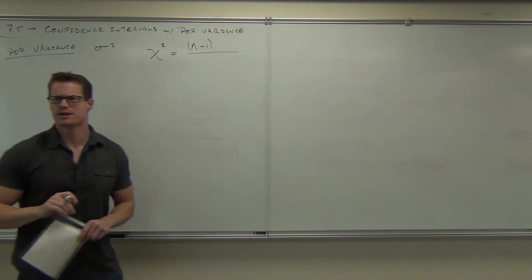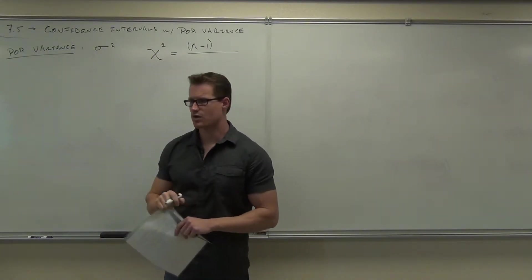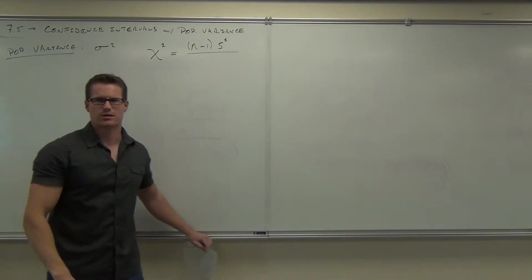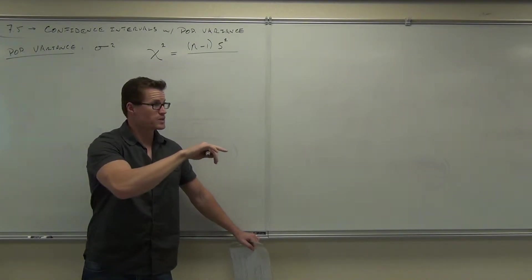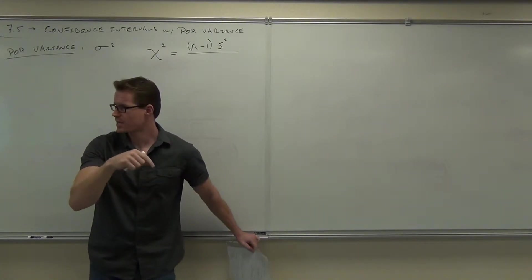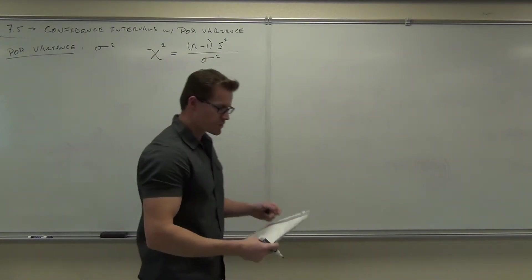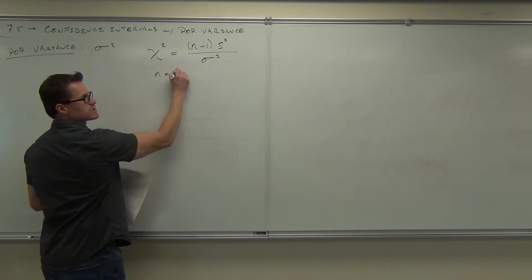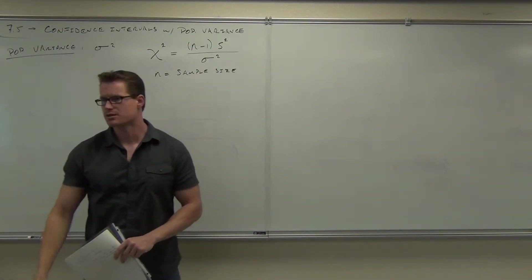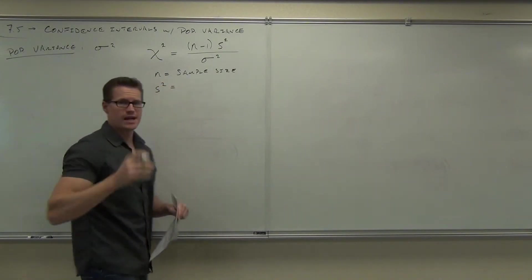You take n minus 1. What's n stand for? Sample size. Or if you're talking about trials, number of trials. But in our case, sample size. Then you're going to take s squared. What's s squared? S would be sample standard deviation. So what's s squared? Sample variance. With the s, that's sample variance.